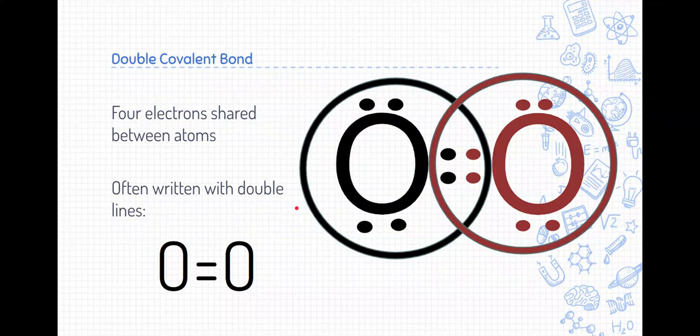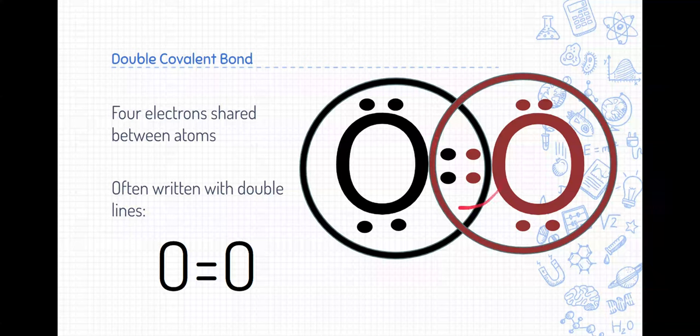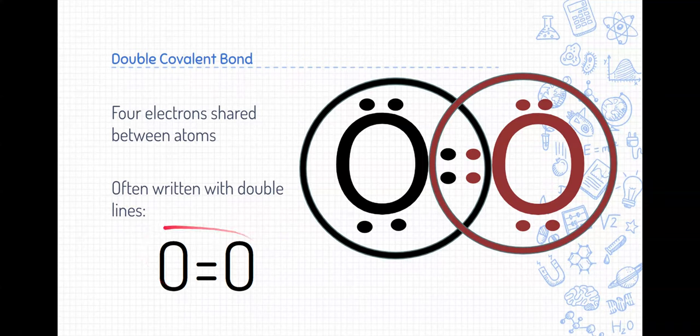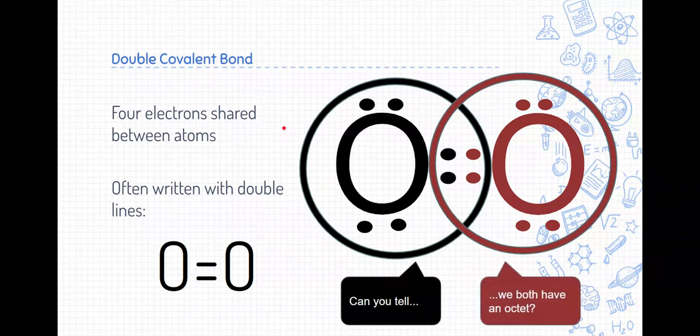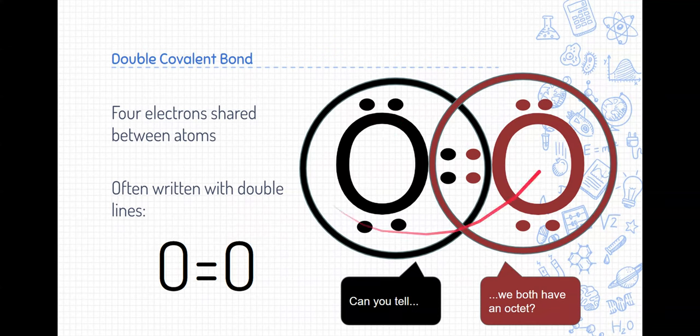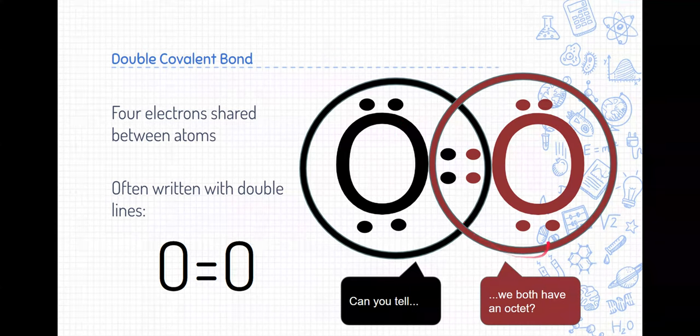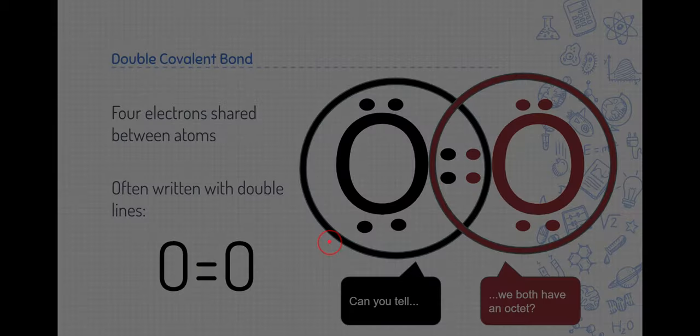Here's another example of a covalent bond. These are between two oxygen elements. Now, this covalent bond, you might notice, is sharing four valence electrons. We call this a double covalent bond, which is a little bit easier to see when it's written in this format. This is how you would write that in a simplistic form. And this is the electron dot structure over here on the right. Can you tell we have an octet in both of them? If you follow these circular rings, you can see that this oxygen has eight, and this oxygen has eight, because they're double dipping on those four electrons in the middle.